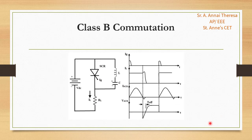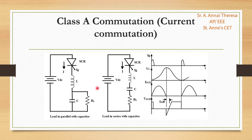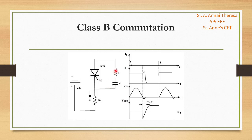The second one is Class B commutation, where the SCR is self-commutated by an LC circuit. The main difference between Class A and Class B is that in Class A, the LC component is connected in series with the thyristor, whereas in Class B, it is connected in parallel with the thyristor. Before triggering the SCR, the capacitor is charged up with the upper plate positive.